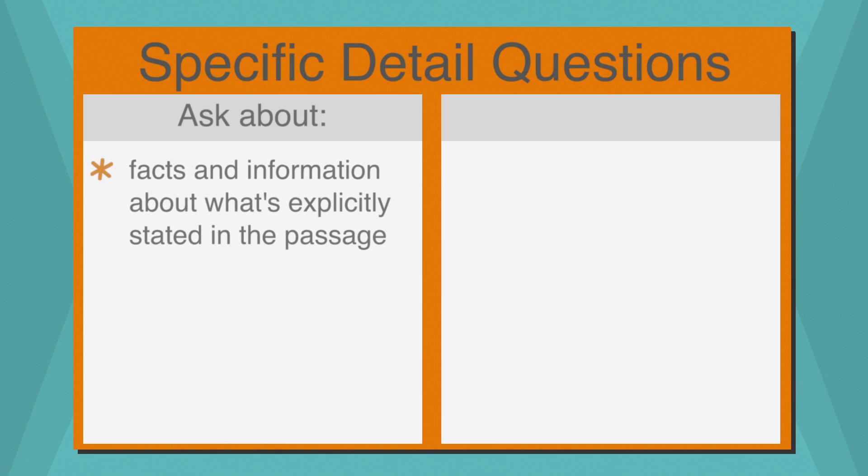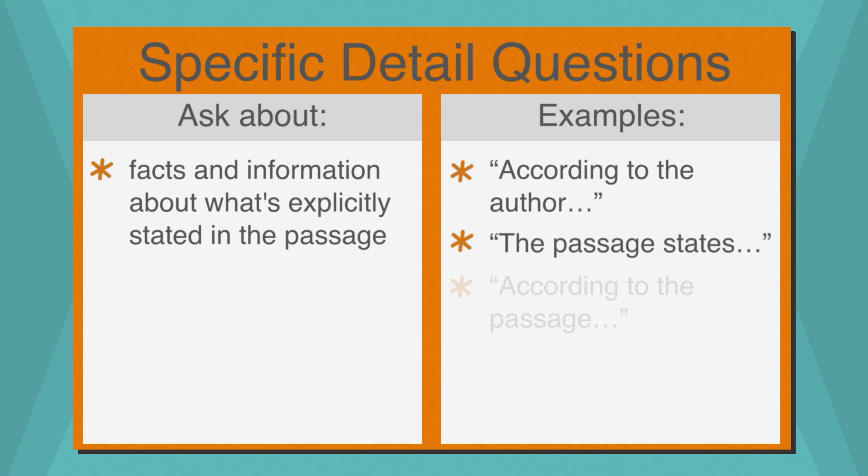On the other hand, specific detail questions will ask about facts and information explicitly stated in the passage. Here are some examples of the language used in specific detail questions: according to the author, the passage states, and according to the passage. These types of questions require specific detailed answers. So an answer that is general or global or isn't stated in the passage is probably going to be incorrect.